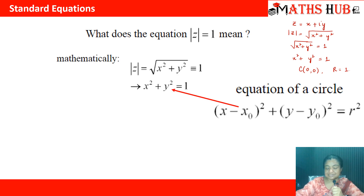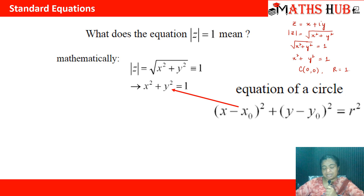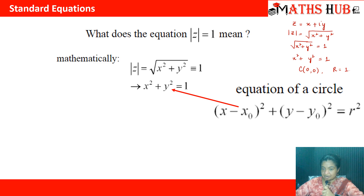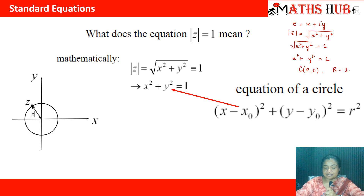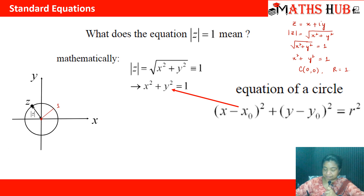This is the meaning of the equation |z| = 1. It is the equation of a circle with center at the origin and radius equal to 1, since there is no shift in the x-axis. The standard equation of a circle is represented as (x - x₀)² + (y - y₀)² = r². Here the center is (0, 0) and radius is 1 unit. This is how we draw it on the two-axis coordinate system.